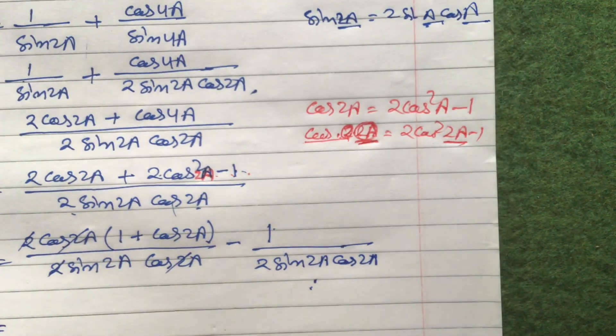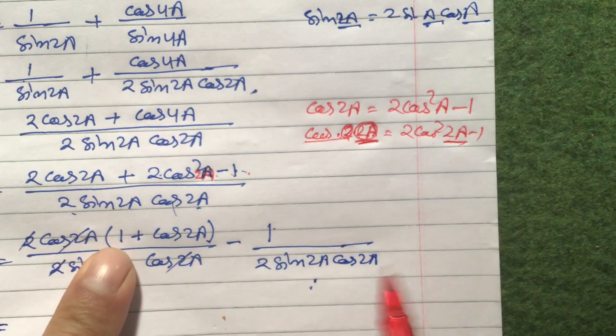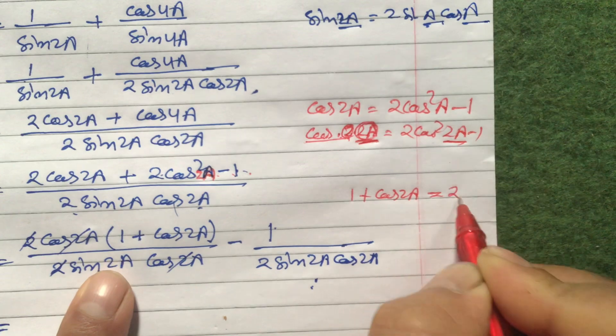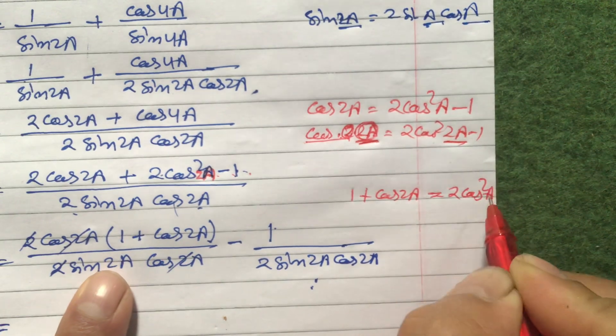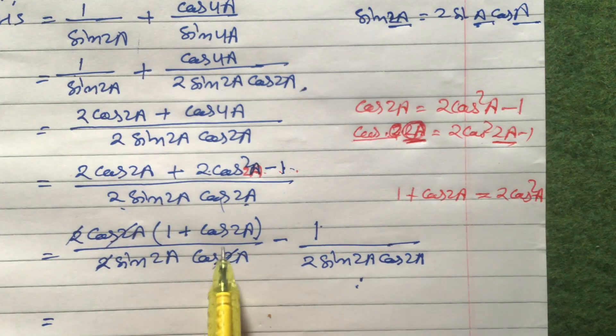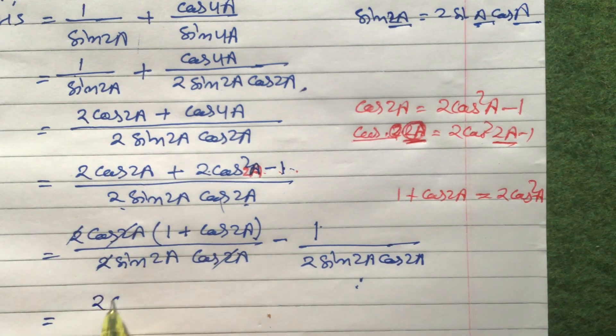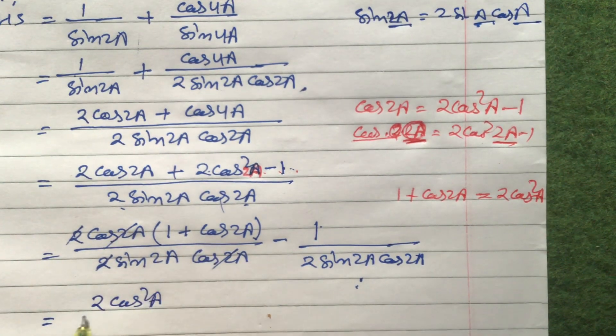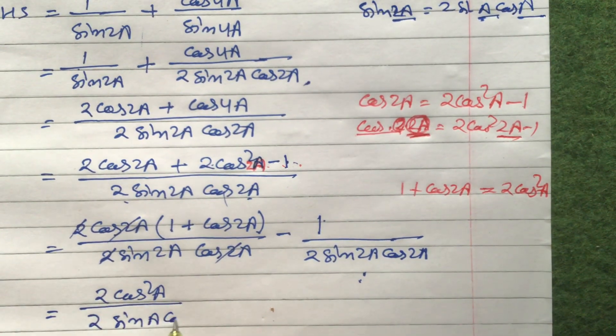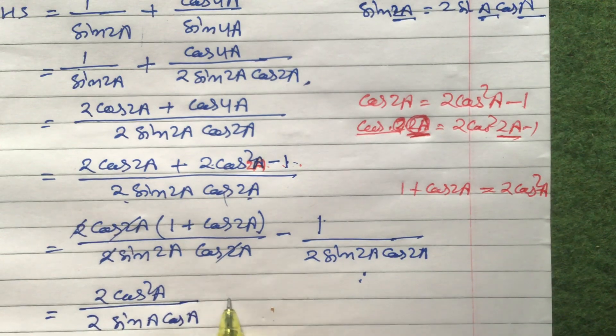Now again, we have got one formula. Formula of 1 plus cos 2a. What is the formula of 1 plus cos 2a? 1 plus cos 2a is equal to 2 cos square a. So this formula we can apply here. So if you apply the formula here: 2 cos square a divided by sin 2a is 2 sin a cos a. This formula we can apply.